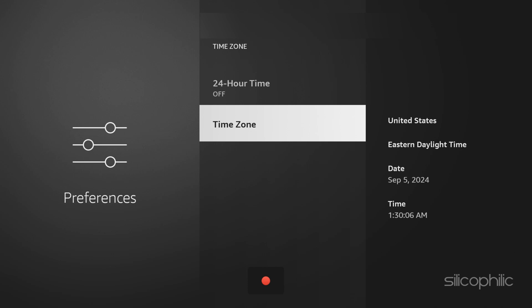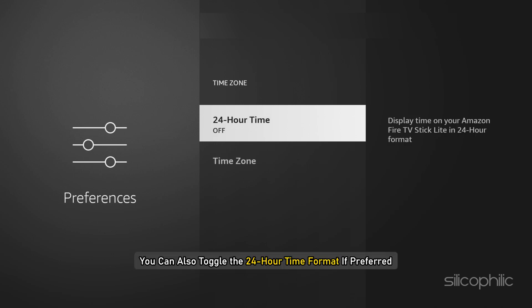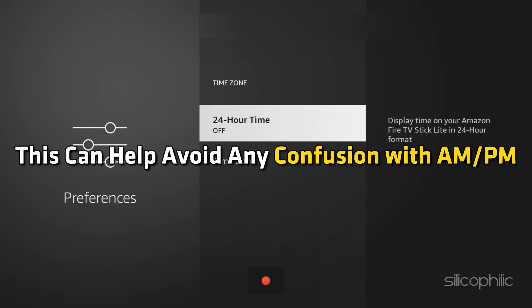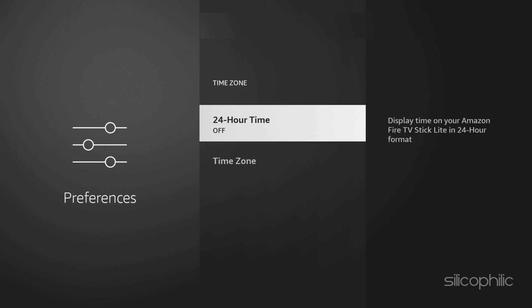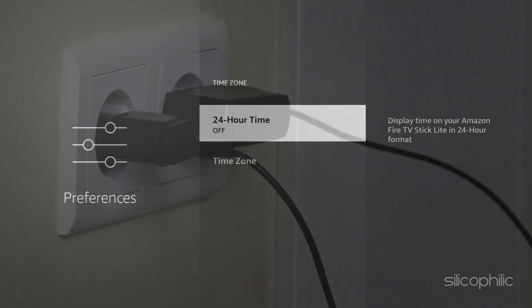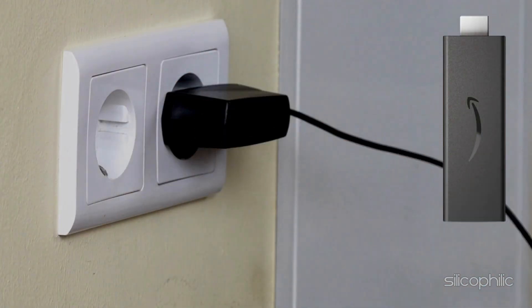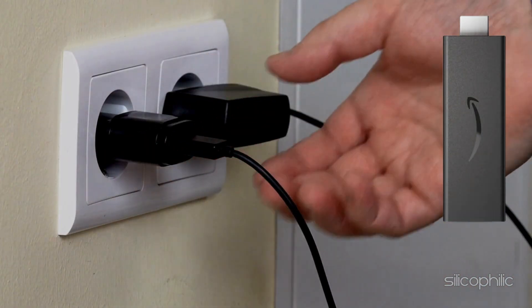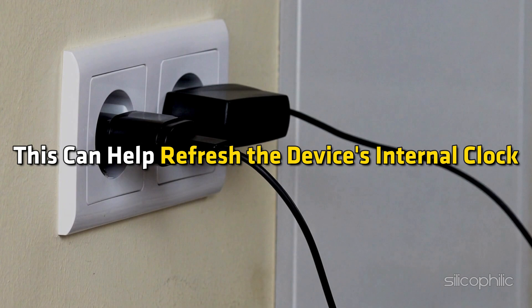In the Time Zone settings, you can also toggle the 24-hour time format if preferred. This can help avoid any confusion with AM or PM. If the date and time are still incorrect, try resetting your Firestick by unplugging it from power for a minute before plugging it back in. This can help refresh the device's internal clock.